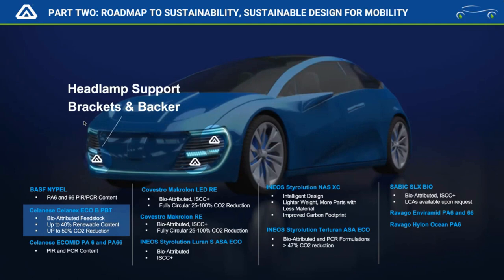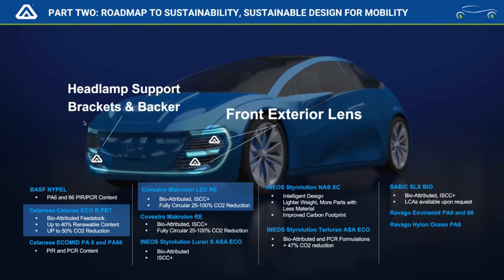For forward lighting headline support brackets, the Selenex Echo PBT from Celanese has up to 40% renewable content from biomass. Converting one pound of bio-PBT versus one pound of standard material yields up to 50% carbon reduction right out of the gate, giving tangible, measurable scope 3 reductions. For forward exterior lens applications, we have the Covestro bio-attributed polycarbonates — fully circular feedstocks offering 25–100% fully carbon-neutral scenarios, ISCC+ certified.